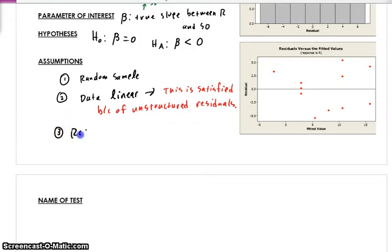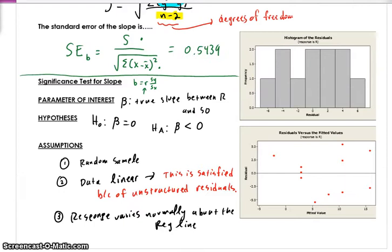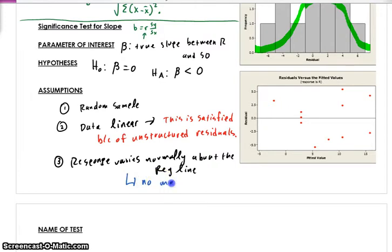The third assumption is that the response varies normally about the regression line. And the way we're going to test this is we're going to look at the residuals. And we're going to see, do the residuals sort of follow a normal model? Well, here's a histogram of the residuals. This is something we got from Minitab. And what I see is clearly the residuals are not normal. But, again, remember, these are real data. But I don't see any huge signs of non-normality. And the test we're going to run is actually a t-test. And that's very robust. But I see sort of unimodal. I see sort of symmetry. I don't see any major outliers. So we're okay here. So no major signs of non-normality in the residuals. That's the third assumption.